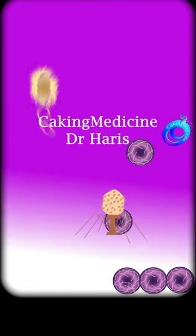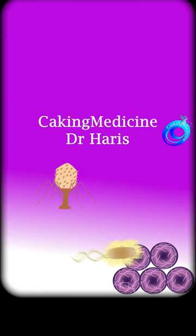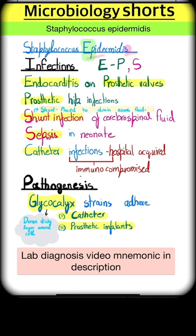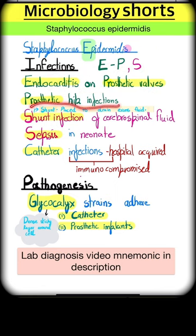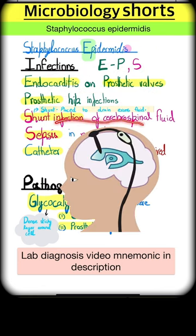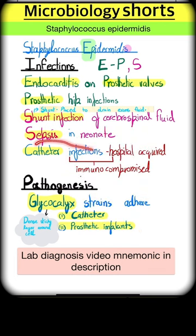In microbiology shots, we have Staphylococcus epidermidis. The mnemonic E-N-P-S covers its key infections. E and P stands for endocarditis on prosthetic valves, prosthetic hip infection, and shunt infection — the CSF shunt is placed to drain excessive fluid in the ventricles of the brain. Additional infections include sepsis in neonates and catheter infections.